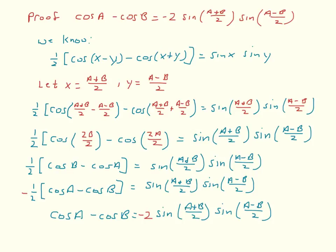We're going to prove that cosine of a minus cosine of b equals negative two sine of a plus b over two, sine of a minus b over two — identity number four. Starting from the product to sum identity: one-half times the cosine of x minus y minus the cosine of x plus y equals sine x sine y. I'll use this one since we want a product of two sines. Let x equal a plus b over two and y equal a minus b over two. Plugging in, we get one-half times the cosine of a plus b over two minus a minus b over two, minus the cosine of a plus b over two plus a minus b over two, equals sine of a plus b over two, sine of a minus b over two.